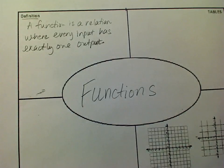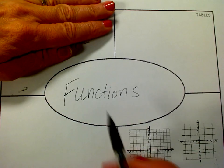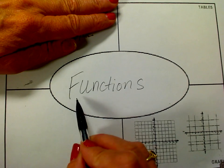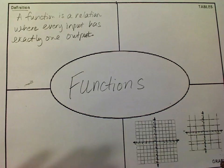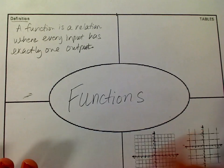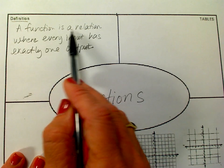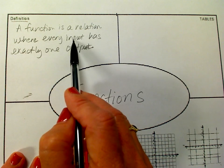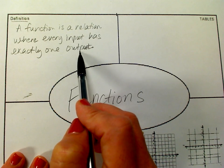Alright, this is for Algebra 1. We're talking about functions and what a function is. So on your paper, would you make sure you go ahead and write 'functions'? We're going to look at the definition. A function is a relation where every input has exactly one output.